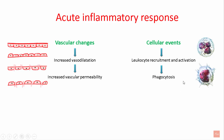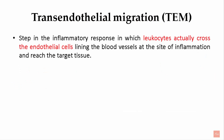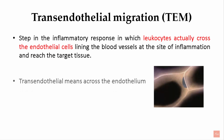Then there are cellular events, which involve leukocyte recruitment and activation, and finally phagocytosis. Leukocyte recruitment is the most important process in acute inflammatory response. Transendothelial migration is a step in the inflammatory response in which leukocytes actually cross the endothelial cell lining the blood vessel at the site of inflammation and reach the target tissue.